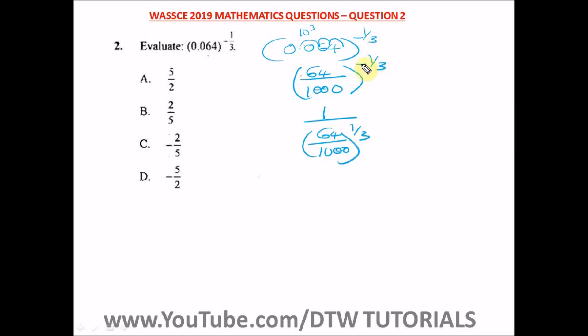I hope you remember indices, when you have a negative power, to remove this negative power, you will invert. You divide the whole number. Where you have a raised to minus 1 is equal to 1 raised to power 1 divided by a, raised to power of whatever power it is. That's the same thing we just did here. Remember the law of indices.